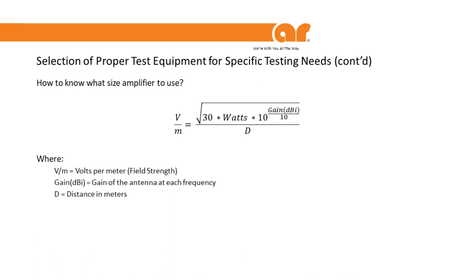A common equation used to determine amplifier size has an issue: the gain listed is a far-field gain, but EMC testing is typically performed in the near field. When you run this equation to estimate how much power you need for a certain field strength at a certain distance, it can be used as a guide — but it is not a tried-and-true guarantee that you will make field, because it is based on far-field conditions while you're testing in the near field.